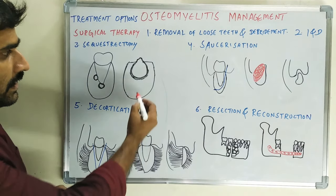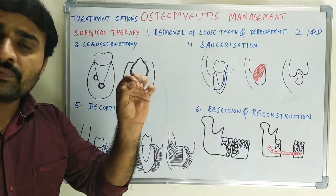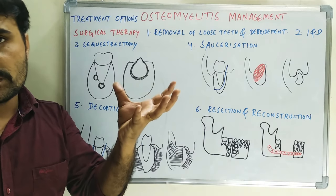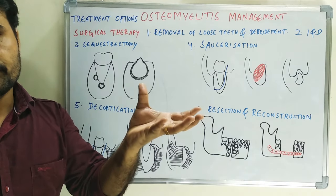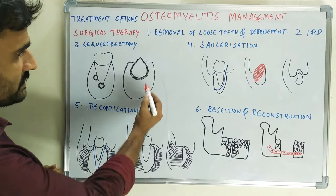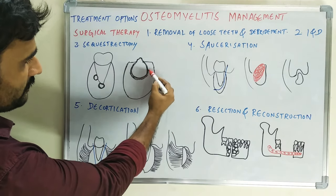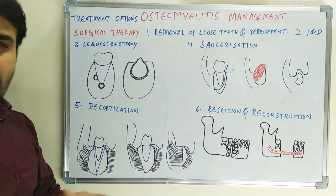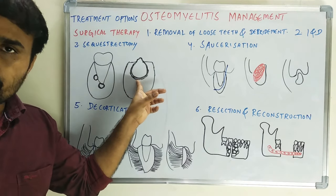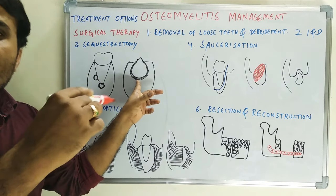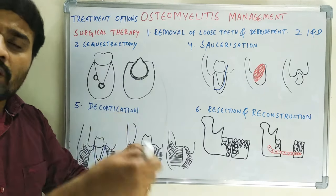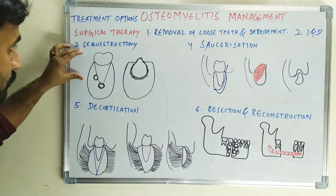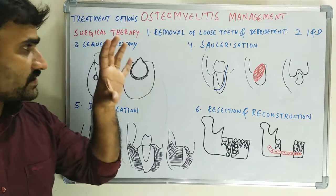If there are no teeth and the sequestrum is pointing intraorally — that is, exposed intraorally — you can simply remove the sequestrum. After removal, debride the socket and place a suture if necessary. This is the simplest form of sequestrectomy.